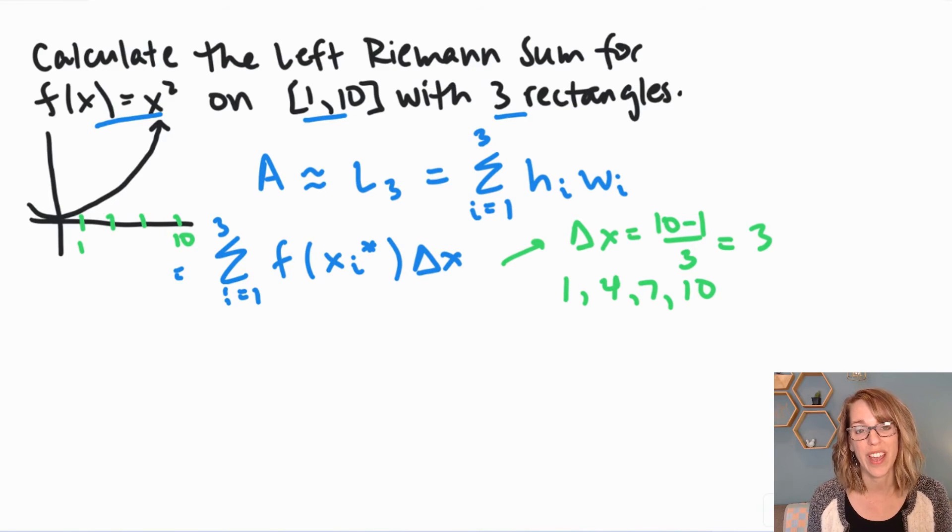Next let's do the height. The height is going to be my function value on the left hand side. So if I build these onto my graph, my first rectangle is going to go up to the function at 1 and then create a rectangle from there. The next rectangle is going to have a height at 4 and then over to 7. And then that last rectangle is going to have a height at 7 and then over to that last endpoint of 10.